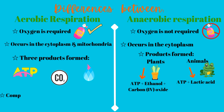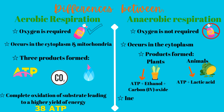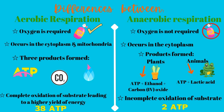In aerobic respiration, high amounts of energy are produced — specifically 38 molecules of ATP — because the substrate is completely broken down, making it a very efficient method. In anaerobic respiration, the substrate is only partially broken down, resulting in a lower amount of energy — specifically 2 ATP molecules — making it an inefficient method. And that brings us to the end of this lesson.